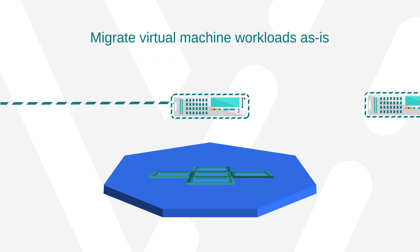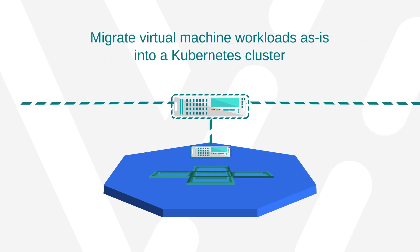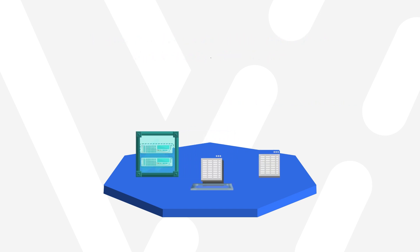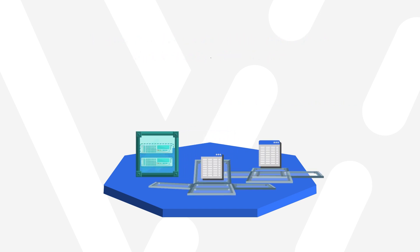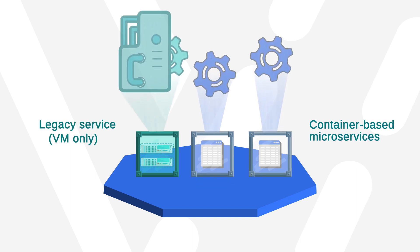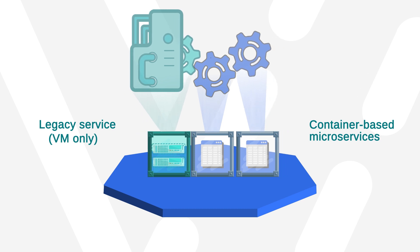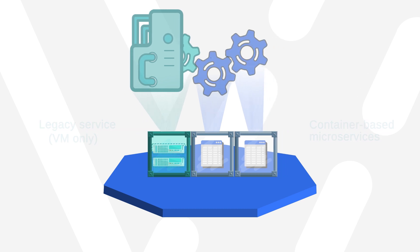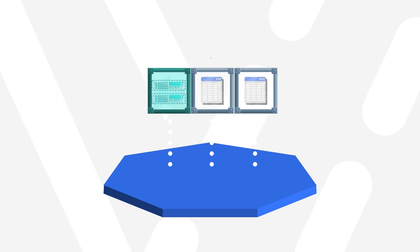With KubeVert you can migrate virtual machine workloads as-is into a Kubernetes cluster. For example, if an application you're developing is mostly composed of container-based microservices, but there's one legacy service that can only run in a VM, with KubeVert you can enable the VM to run and be managed by Kubernetes alongside the containers that host the microservices.